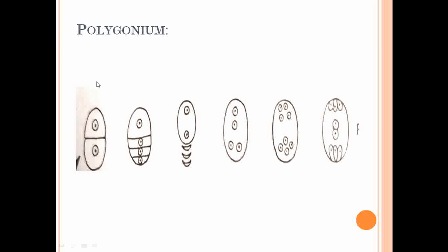The active megaspore undergoes first transverse division to form the dyad cell. This dyad cell undergoes further transverse division to form the tetrad cell. In the Polygonum type, the three cells at the chalazal end degenerate, and the cell at the micropylar end becomes functional and undergoes further nuclear division. This active megaspore undergoes nuclear division to form the binucleate stage, then the tetranucleate stage, then the 8-nucleate stage.